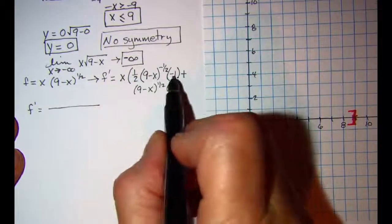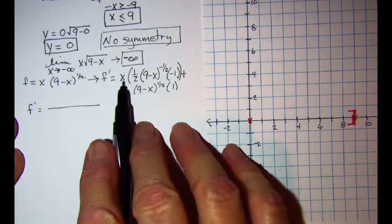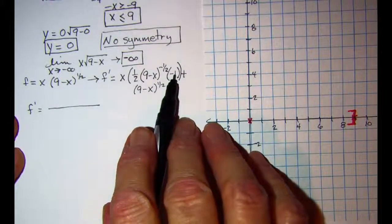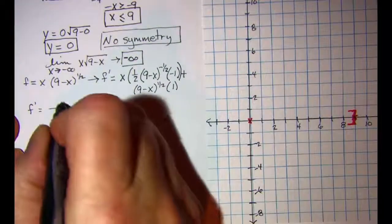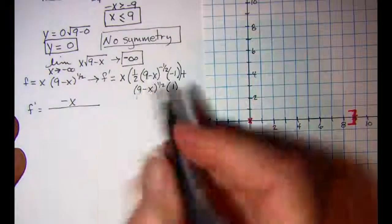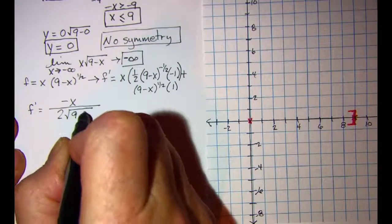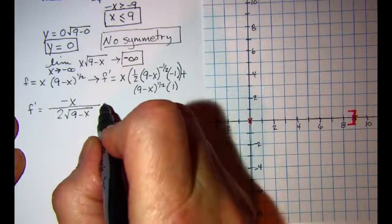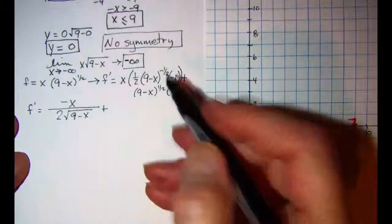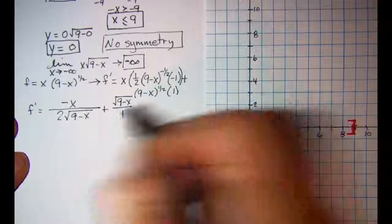We need to simplify this derivative. So in the first term, it looks like we have negative x in the numerator, and then I have a 2 and then this square root in the denominator, plus the second term which is the square root in the numerator. That would be over 1.